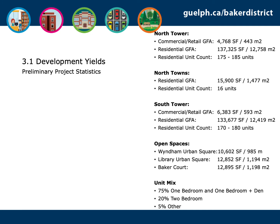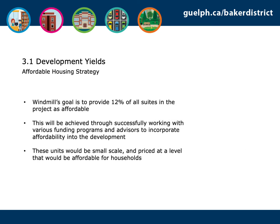Preliminary project statistics for the private developments within the Baker District, along with the scale of the open spaces provided, are included in the UDMP and include an estimate of residential units as well as non-residential floor areas within the North and South Towers. Windmill's goal is to provide 12% of all suites in the project as affordable. The actual final affordable component will be a function of successfully working with various funding programs and advisors, including city programs and other housing providers.